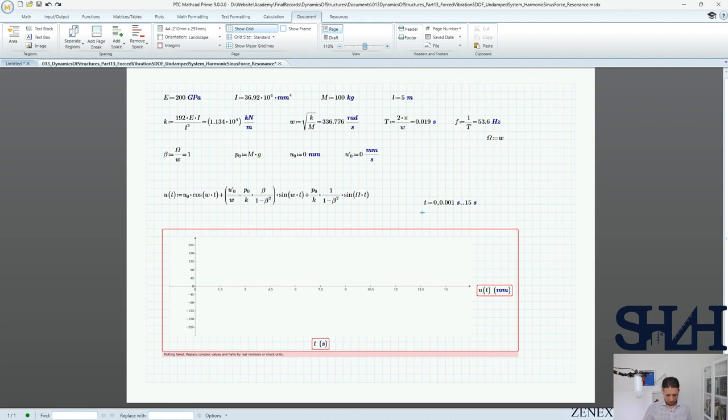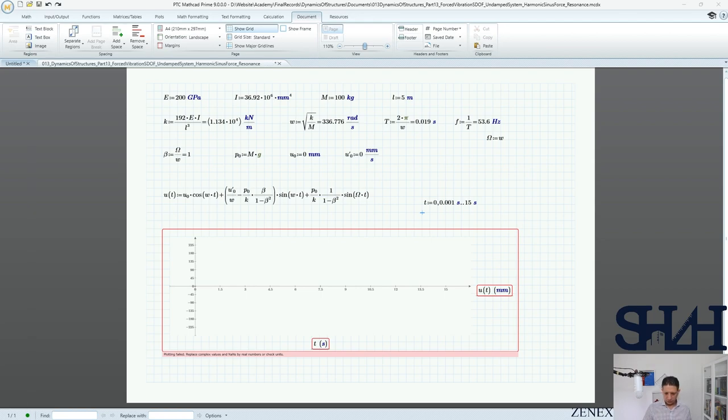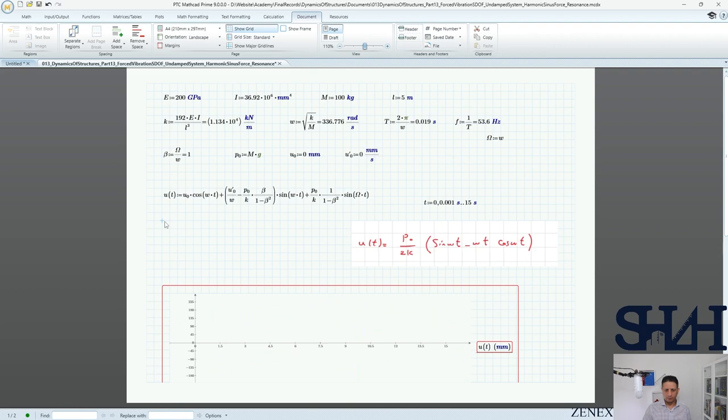Now let's have a look at what we found in this solution. I can bring this down and we can write u_resonant as a function of t equals p₀ divided by 2 times k times (sin(ω·t) minus ω·t·cos(ω·t)).